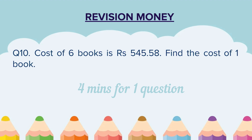Question 10: The cost of six books is rupees 545.58. Find the cost of one book. This brings us to the end of the worksheet. Students, if you haven't solved all the questions properly and you want to go back, pause the video here, look at the question again, see your solutions, be satisfied with it, and only when you are 100% sure of your answers, unpause and see the solution.